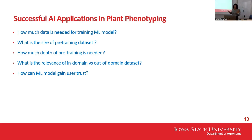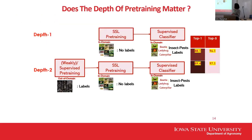Another question is whether an ML model can gain user trust — if you create an app and the farmer is using it but it doesn't work perfectly, they'll say it's rubbish and stop using it. To investigate whether the depth of pre-training matters, Shivani ran many experiments. At depth one, one level of self-supervised pre-training was done using an in-domain dataset with all insect data and no labels, then fine-tuning using a supervised classifier with a smaller number of labeled insects.